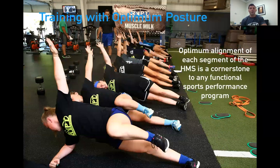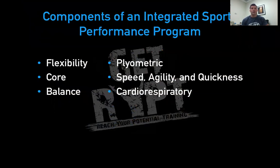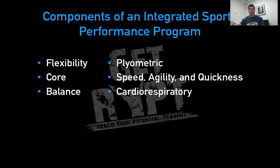Now, we're training in optimal posture. Optimal alignment of each segment of the human movement system is the cornerstone of any functional sports performance program. The components of an integrative sports performance program are flexibility, core, balance, plyometrics, speed, agility, and quickness, and cardiorespiratory systems.